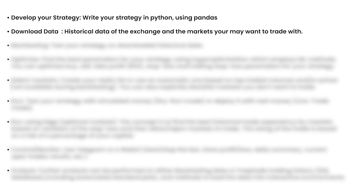You can download historical data from any exchange — just mention in your config file that you want data from Binance, Bybit, or OKCoin, and specify which coin like BTC, Ethereum, Solana, or Ripple, and the time frame: 1 minute, 5 minutes, 15 minutes, 1 hour, or 1 day. You can download multiple time frames in a single command, and even download data for hundreds of pairs across all time frames simultaneously, as long as they are available in the exchange.